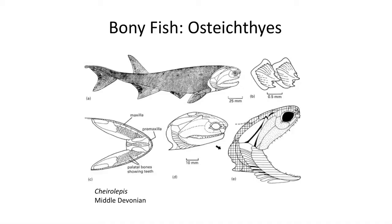Another interesting mid-Devonian Actinopterygian fish is Cheirolepis. The teeth are found on the maxilla and premaxilla bones, as well as in the dentary, but notice that the jaw joint is somewhat movable in its ability to project forward. This is referred to as a kinetic skull, which allows the jaw to be opened more widely to accommodate larger prey.